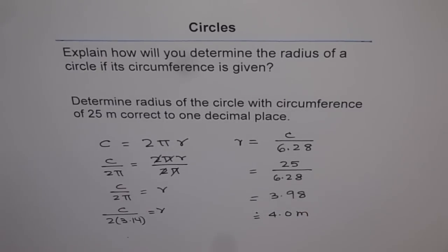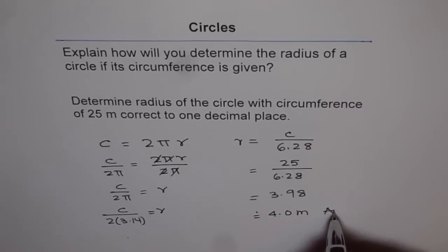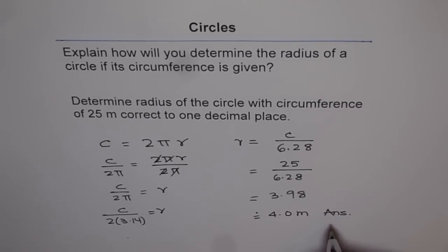So that is how we can solve this problem. Our answer is the radius of the circle with circumference of 25 meters is approximately 4.0 meters. So have a good look at it and try to understand how we isolate radius from the circumference formula. Thank you.